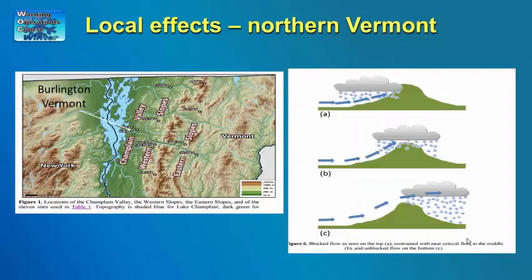Another example of topography impacting snowfall amounts over the eastern U.S. can be seen in northern Vermont during northwest flow. Burlington, Vermont is located in the Champlain Valley just east of Lake Champlain, while the Green Mountains rise 3,000 to 4,000 feet about 20 miles to the east. Northwest flow snow events typically produce moderate to heavy snow amounts over the mountains east of the Champlain Valley in northern and central Vermont. However, there are times when heavy snow is displaced westward over the Champlain Valley, producing heavy snowfalls in the populated areas around Burlington.